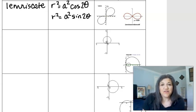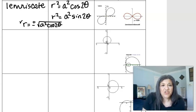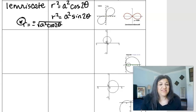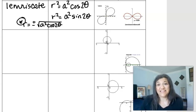So when you put this into your calculator, you are going to want to put r equals plus and minus. So it's going to be r1 and r2, the square root of a squared cosine 2 theta or sine 2 theta. So this is how you're going to have to put this into your calculator if you want to play around with what these infinity symbols look like. Really cool.